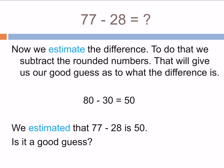Now we estimate the difference. To do that, we subtract the rounded numbers. That will give us our good guess as to what the difference is. So we have 80 minus 30 equals 50. So we have estimated that 77 minus 28 is 50.